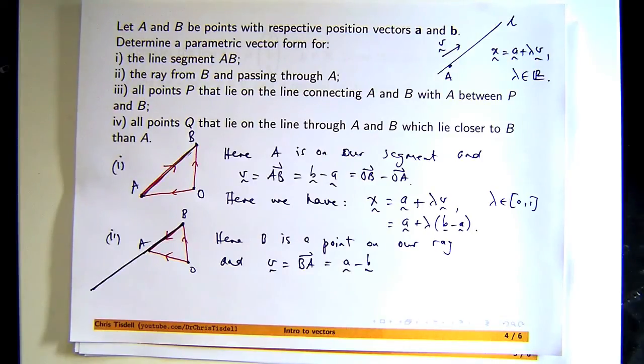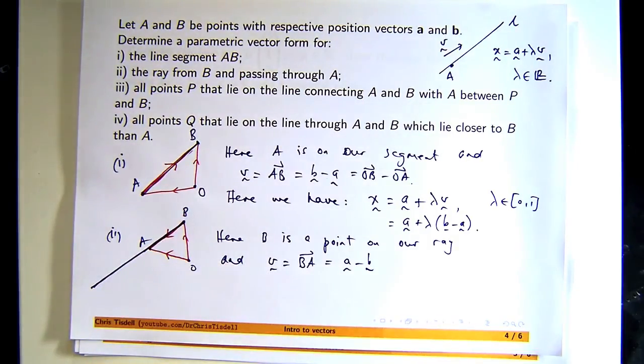Well, we need to get that point, which would be lambda equals zero. But we want to stretch off to infinity. So what do you think the interval for lambda should be? Zero off to infinity.